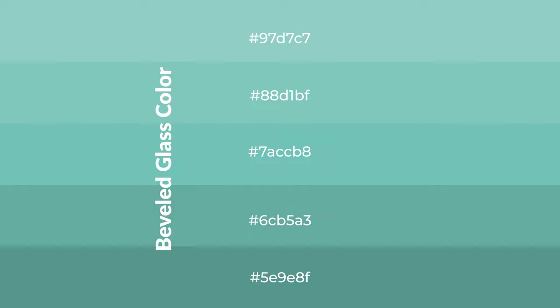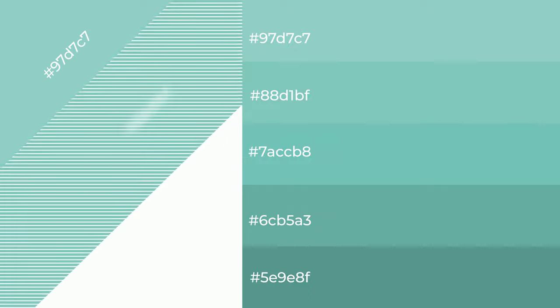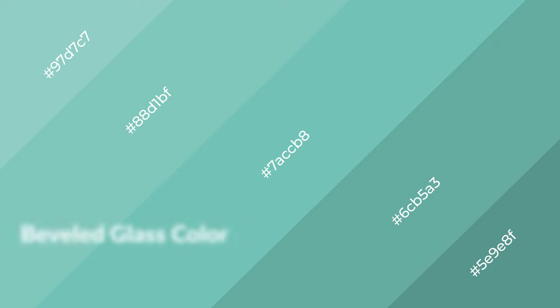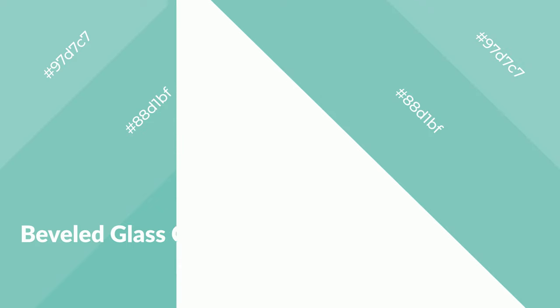To generate shades of a color, we add black to the color. Shades are used in patterns, 3D effects, and layers, and they create depth and drama. Beveled glass is a cool color and it emits calming, serene, soothing, refreshing, spacious, unwinding, peaceful, and relaxed emotions.